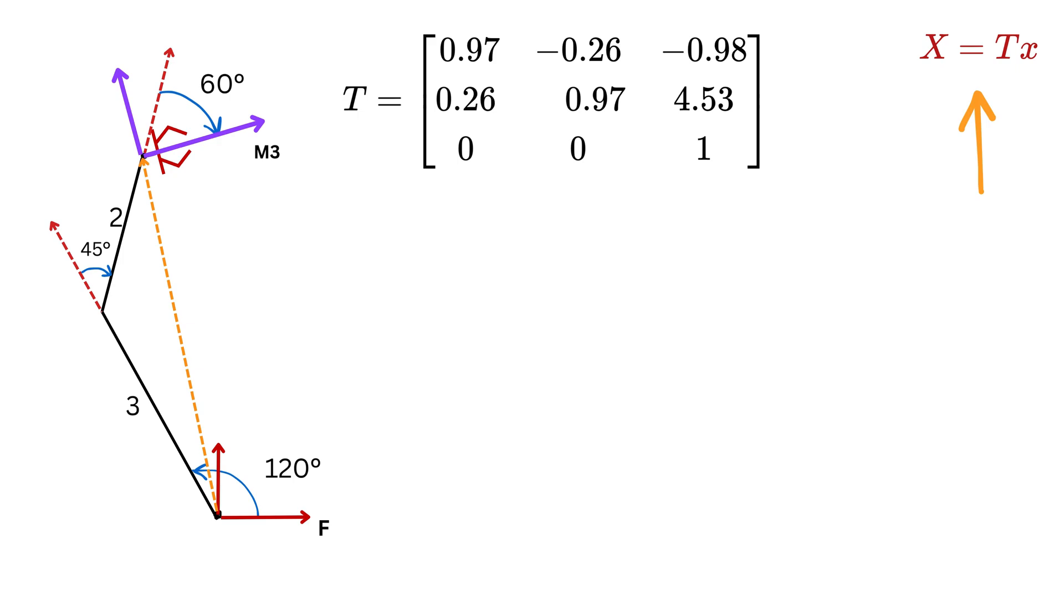So what do we do with T? Well, remember, big X equals T times small x. And since we want the position of the origin of M3, that is, the very center of its own frame, its coordinates in its own frame, or small x, are just zero, zero, and one like this.